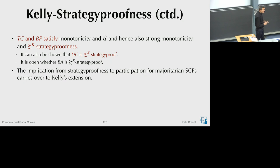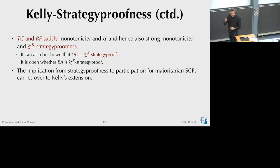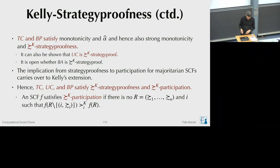The proof establishing that strategy-proofness implies participation for majoritarian functions works regardless of which preference relation over sets we use. Therefore, by the same argument, every Kelly strategy-proof majoritarian function also satisfies Kelly participation. Consequently, TopCycle, Uncovered Set, and the Bipartisan Set satisfy not only Kelly strategy-proofness but also Kelly participation.